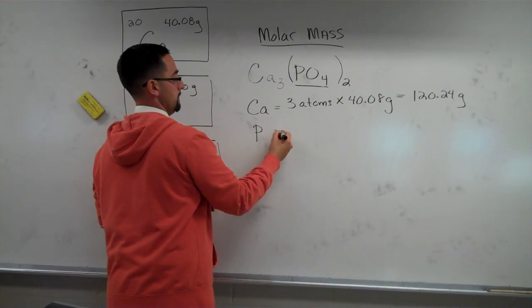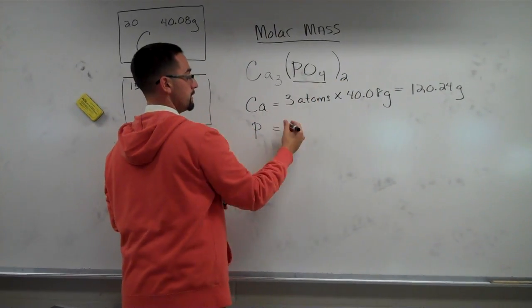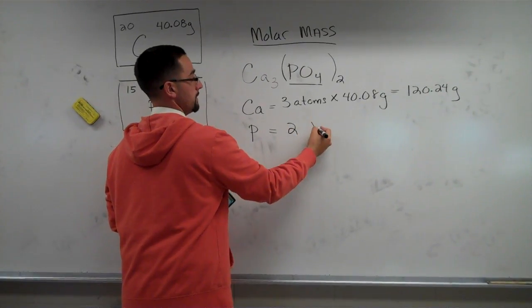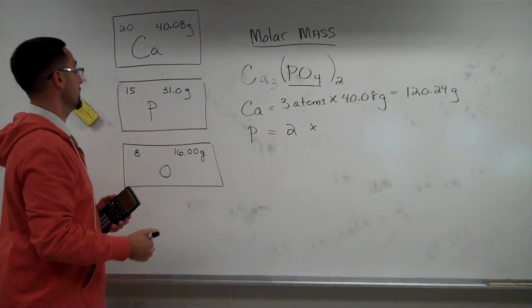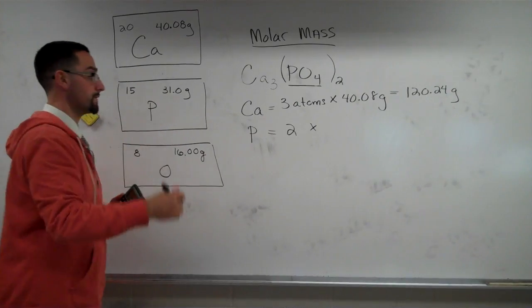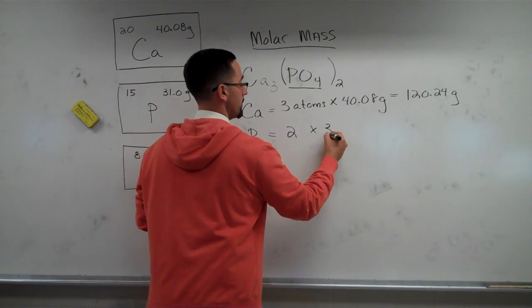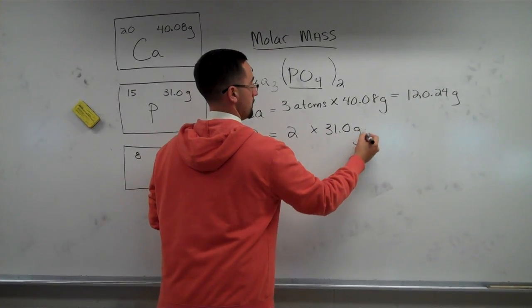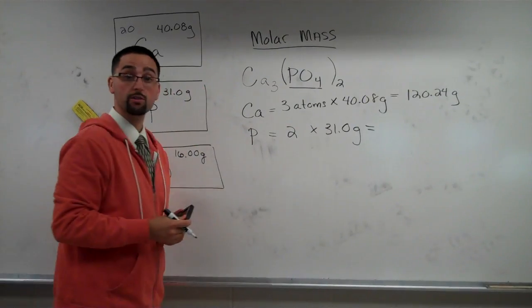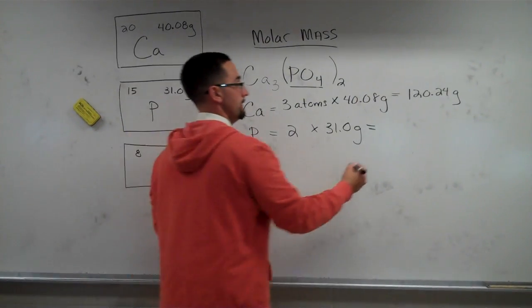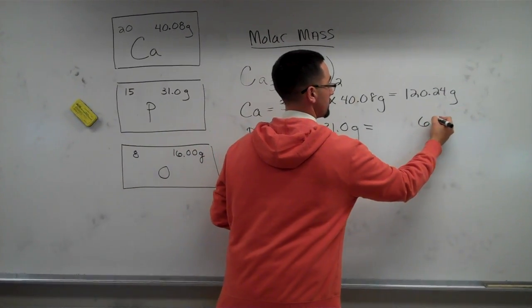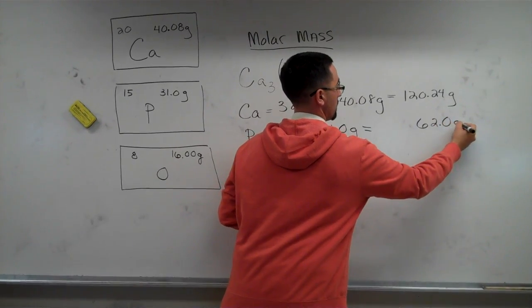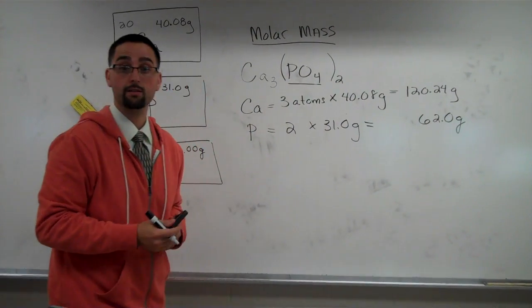So phosphorus, we have two phosphorus times its molar mass and the periodic table says that phosphorus is 31 grams. So that's going to be two times 31 and that's going to contribute 62 grams to the total mass of the compound.